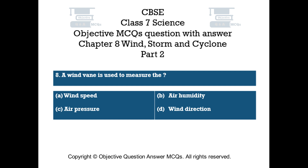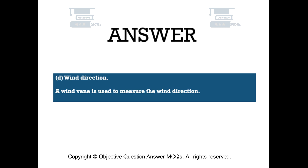Question number 8. A wind vane is used to measure — Option A: wind speed. Option B: air humidity. Option C: air pressure. Option D: wind direction. The right answer is Option D: wind direction. A wind vane is used to measure the wind direction.